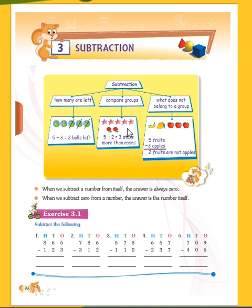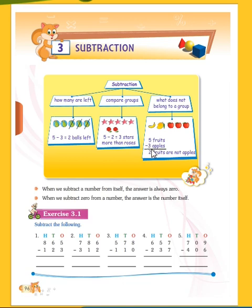Stars are more than the roses because we have only two roses. Next: what does not belong to a group? Here we have fruits — banana, mango, and apples. Total fruits: one, two, three, four, five — five fruits. How many apples? One, two, three — three apples. Five minus three equals two. So two fruits are not apples; those remaining two are mango and banana.